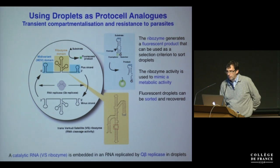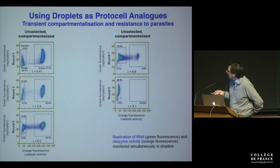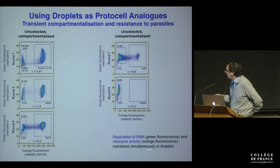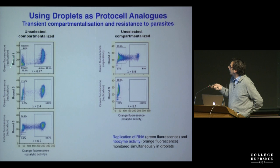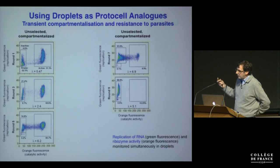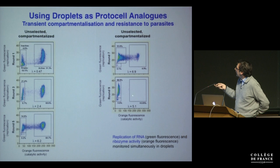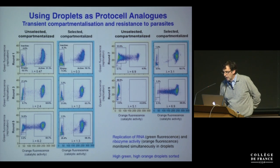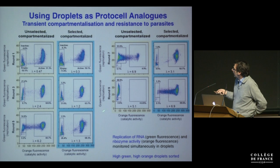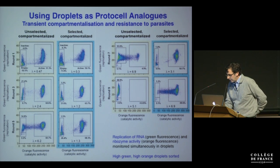We can monitor replication of RNA using green fluorescence from an intercalating dye, and ribozyme activity can be monitored using orange fluorescence production — both simultaneously in drops. Looking at dot plots of orange fluorescence versus green fluorescence: if you don't do any selection for catalytic activity, by around round nine there are no longer any orange fluorescent droplets — all the functional catalysts have disappeared. However, if you select for high orange fluorescent droplets — those with active catalysts — by around round nine you still have lots of droplets containing active catalysts.